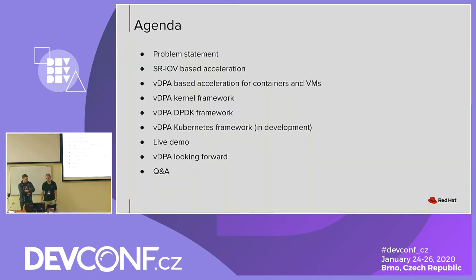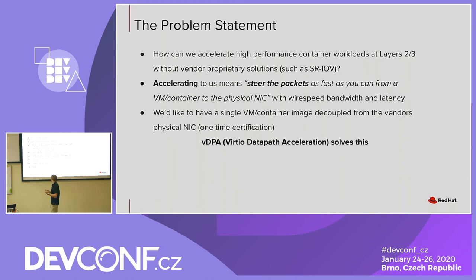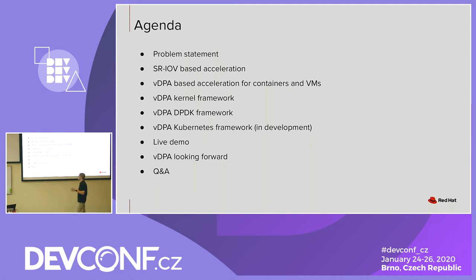Let's get the agenda. We're going to start from the problem statement. One of the issues when we talk about VDPA is that it is so technical, we touch so many things that you can lose sight of the ball. Then we'll talk about SR-IOV-based acceleration — for those not familiar, a few words on SR-IOV and how we use it to accelerate containers and VMs. Then we'll move on to VDPA, explain what it does and how it's used for accelerating containers and VMs. Then the VDPA kernel framework, VDPA-DPDK framework, the VDPA Kubernetes framework, a live demo, looking forward, and Q&A.